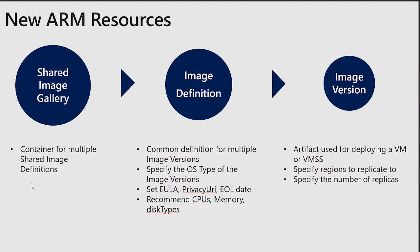We have three new resources. We have something called the Shared Image Gallery — that's the container. And then we have another container inside it called the image definition. And we have another container inside it called the image version.